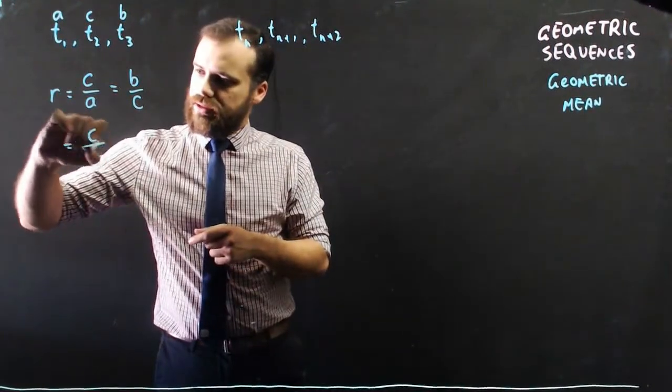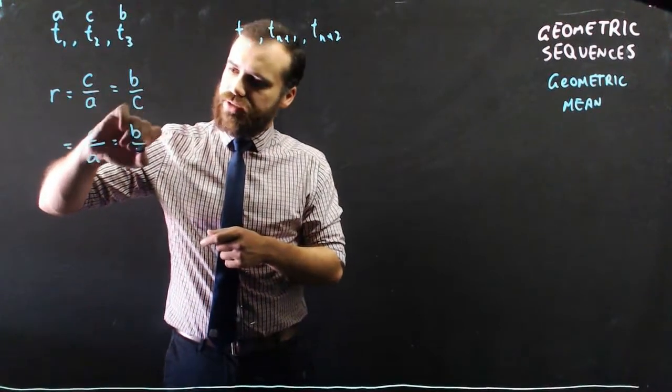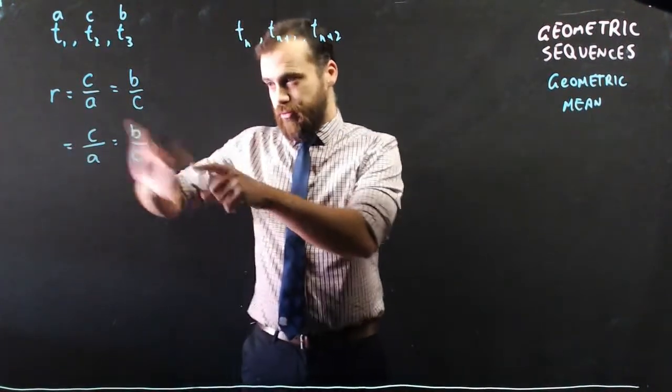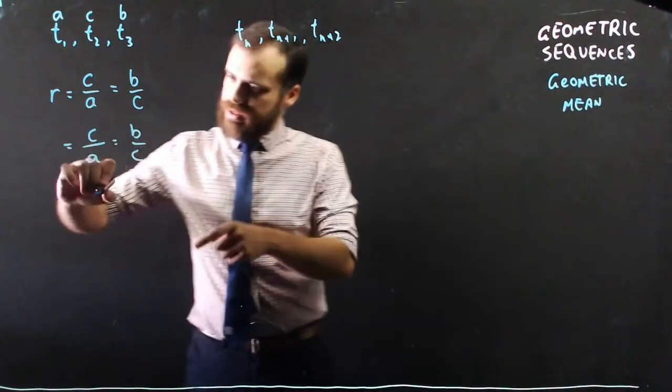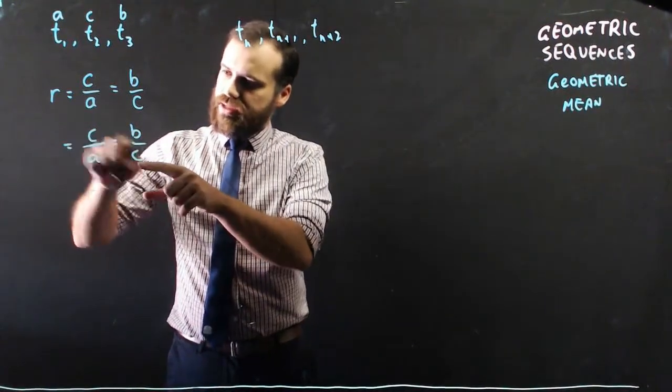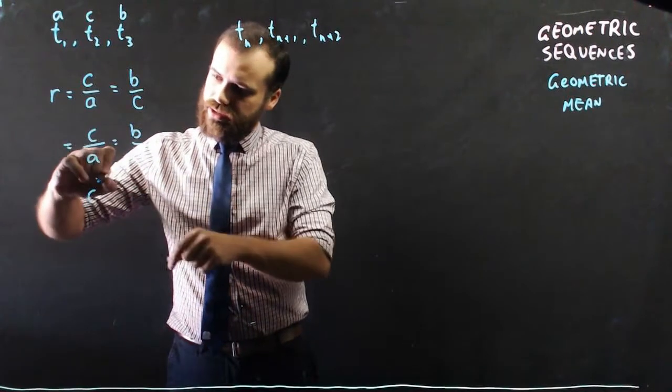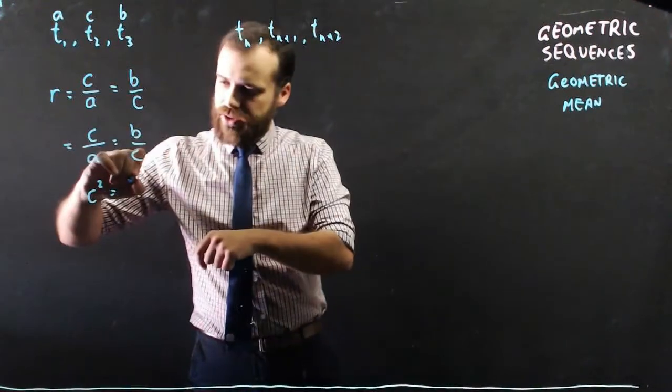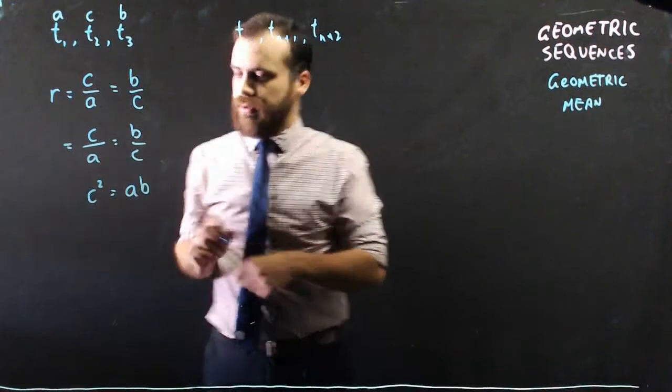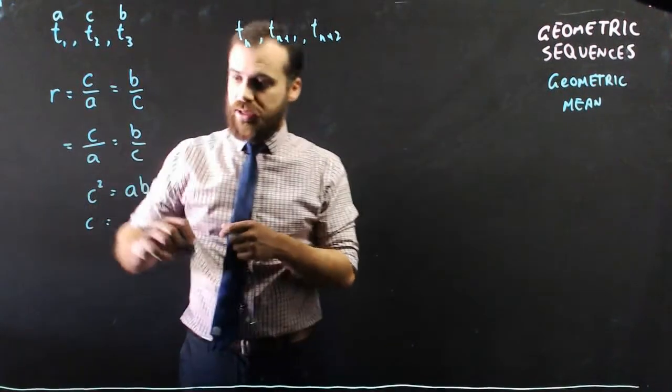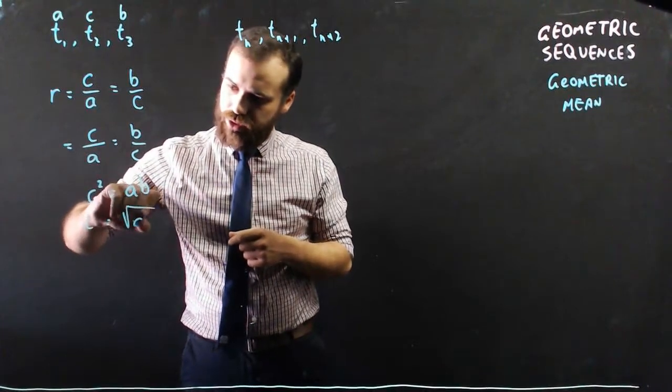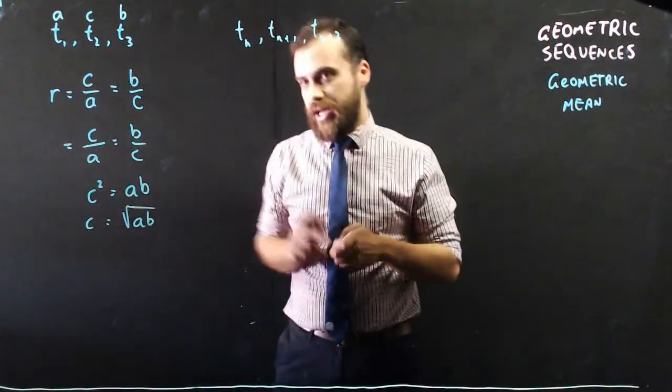That means that C over A equals B over C. Now, if I rearrange that using cross multiplication, we can say that C times C, we can move that C to here, so that's C squared, equals B times A. And then that means that C is going to be equal to the square root of A times B.